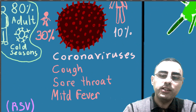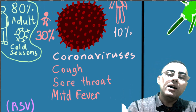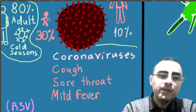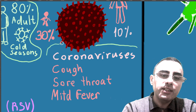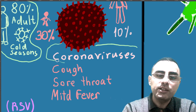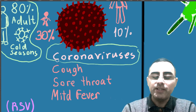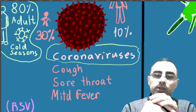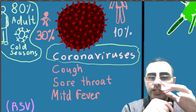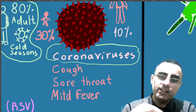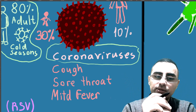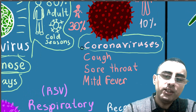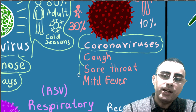The second most common type of virus which causes the common cold is coronaviruses. Of course we know COVID-19, which is also a coronavirus, but in this case different subtypes of coronaviruses cause the common cold. So when we say 'coronavirus' in the context of common cold, we do not mean COVID-19 — we mean other types of coronaviruses.